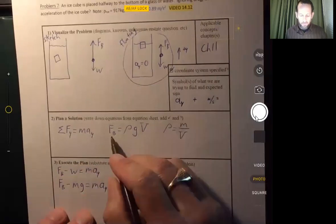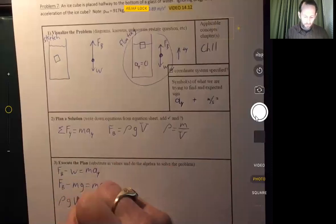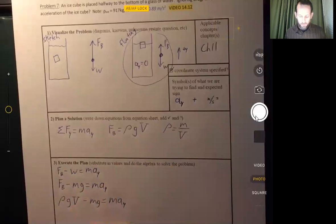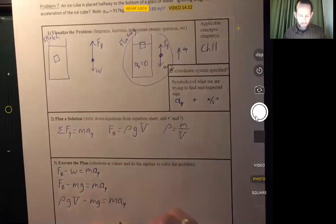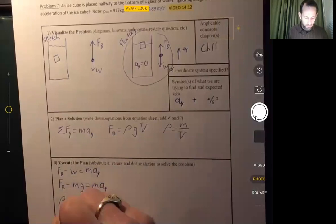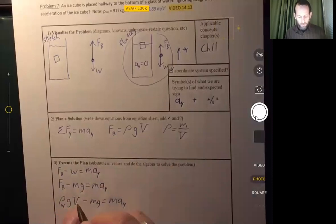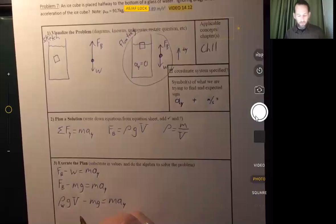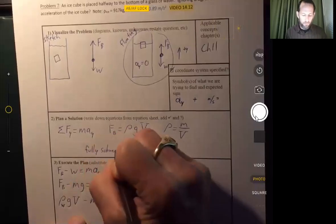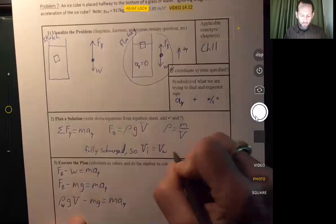We don't know the buoyant force, but we could put it in terms of this. We could say rho G V minus M G equals M A Y. There's really such little amount of information given here. Let's be careful with our subscripts here. This is the density of water, because that's the fluid, times G. This is the volume of the ice cube. It's the volume of water displaced, but it is equal to the volume of the ice cube because it's fully submerged.